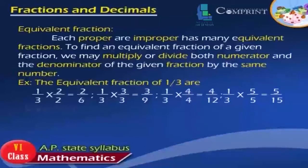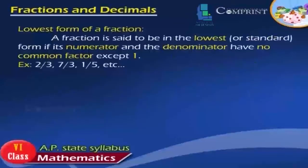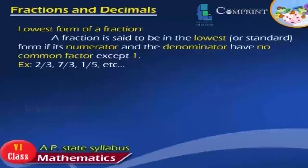1 by 3 multiplied by 5 by 5 is equal to 5 by 15. Lowest Form of a Fraction. A fraction is said to be in the lowest form if its numerator and denominator have no common factors except 1. Examples: 2 by 3, 7 by 3, 1 by 5, etc.